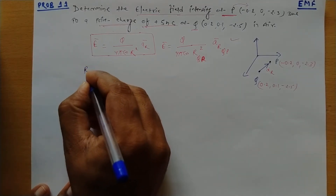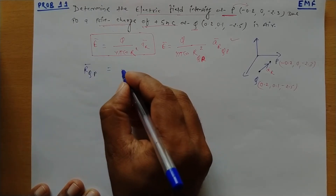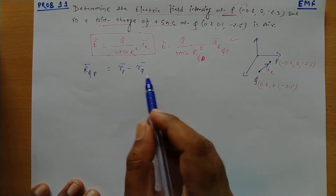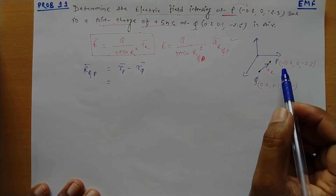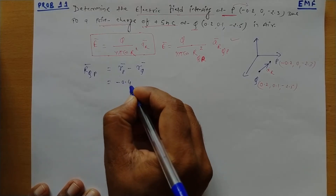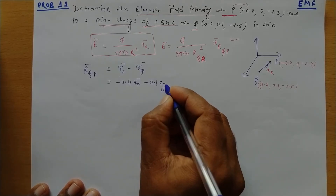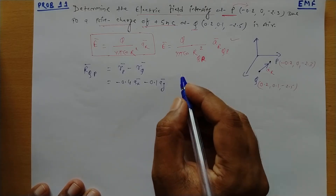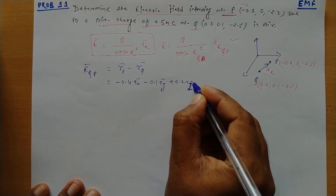So we can find R_QP, which is given as R_P minus R_Q — the position vector of point P minus the position vector of point Q. So R_QP means P minus Q: (-0.2 - 0.2) = -0.4 in the ax direction, (0 - 0.1) = -0.1 in the ay direction, and (-2.3 - (-2.5)) = +0.2 in the az direction.